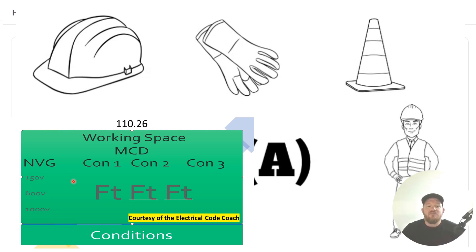Then we need to deal with this condition business. Down at the bottom it lists your conditions below this table. Condition one is if there's exposed live parts on one side. Condition two is if there's exposed live parts on one side and there are grounded parts on the other side, like a block wall. Condition three is if there are exposed live parts on both sides.